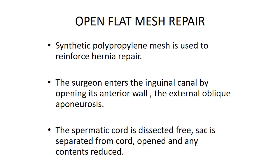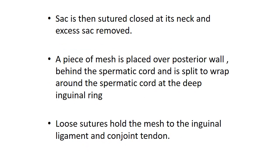Flat mesh repair: synthetic polypropylene mesh is used to reinforce hernia repair. The surgeon enters the inguinal canal by opening its anterior wall — the external oblique aponeurosis. The spermatic cord is dissected free, the sac is separated from the cord, opened, and any contents reduced. The neck is then sutured closed and excess sac removed. A piece of mesh is placed over the posterior wall, behind the spermatic cord, and is split to wrap around the spermatic cord at the deep inguinal ring. Loose sutures hold the mesh to the inguinal ligament and conjoined tendon.